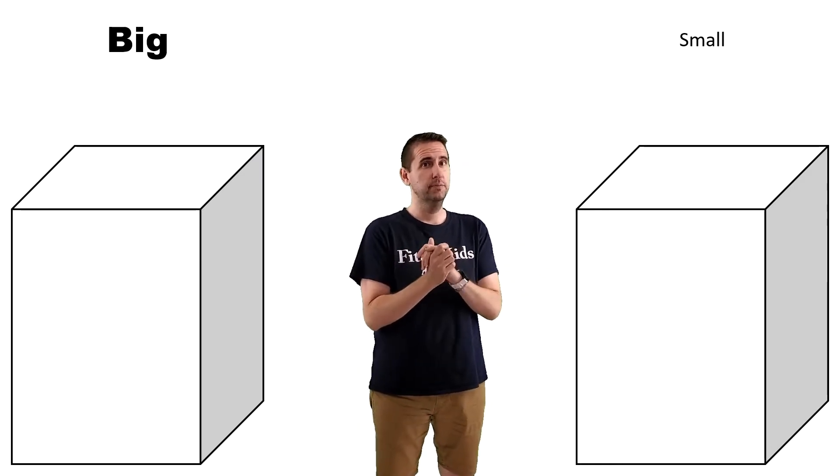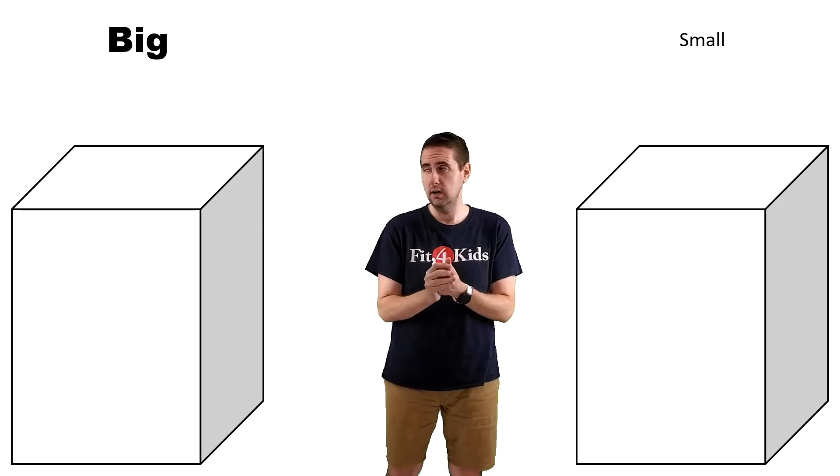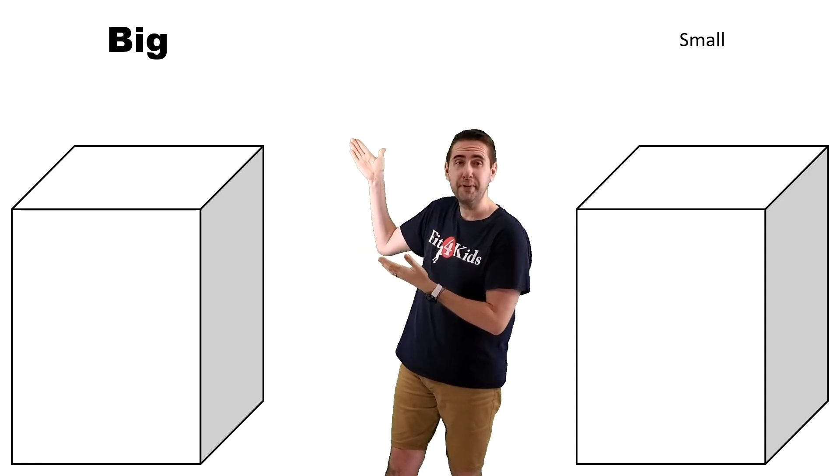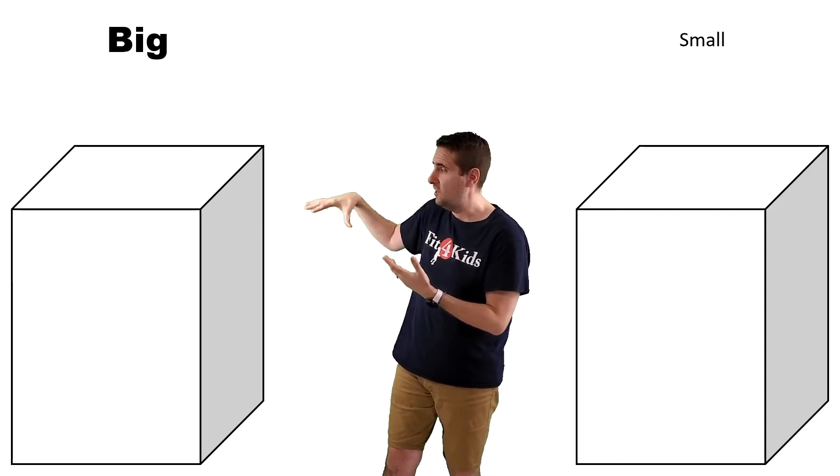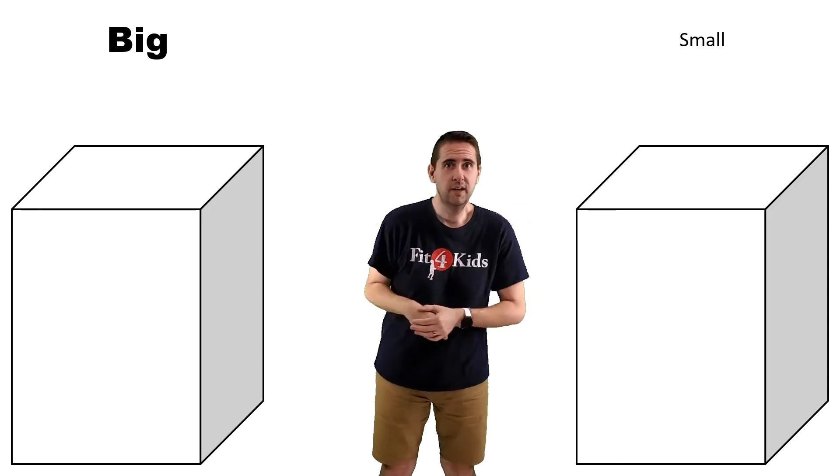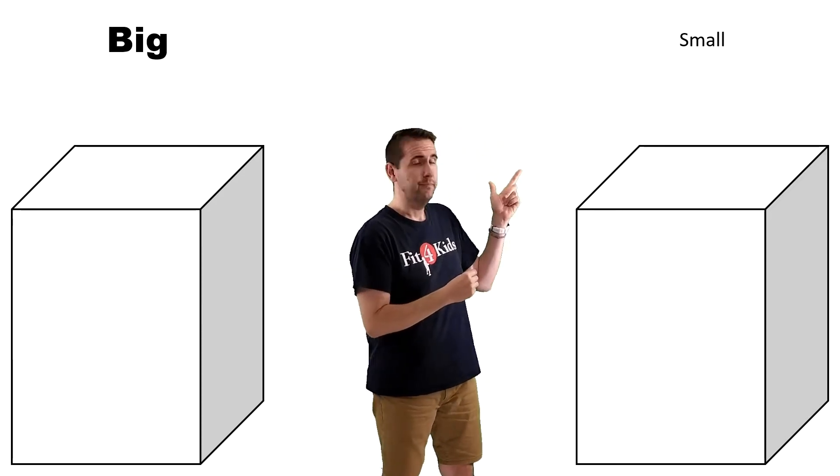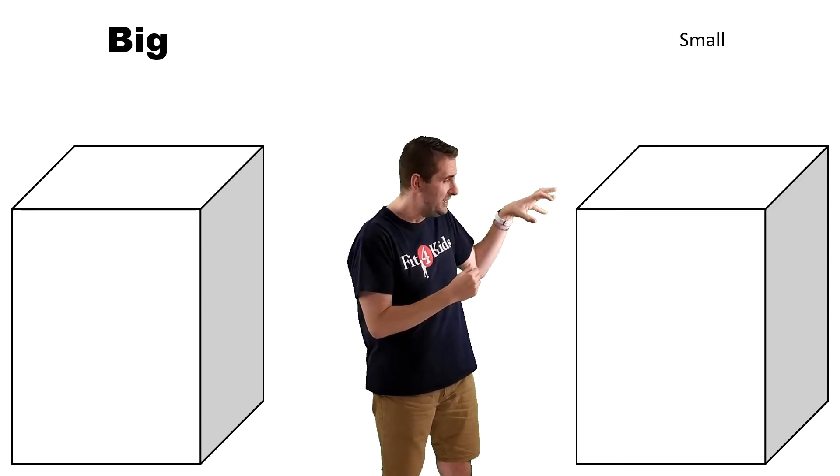Now our first set of groups that we're going to sort into are big. This is the word big up there. We're going to put the big stuff in this container over here and small. We're going to put the small things in this container over here.